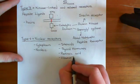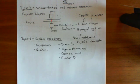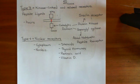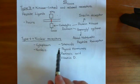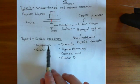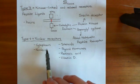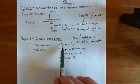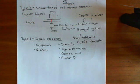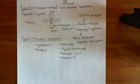That concludes our discussion of the four types of receptors. We have ligand-gated ion channels acting within milliseconds; G-protein-coupled receptors acting within seconds; kinase-linked and related receptors producing changes in gene expression over hours; and type 4 nuclear receptors, which are in the cytoplasm or nucleus — not in the plasma membrane — so their ligand, such as steroids, must be hydrophobic enough to diffuse across the plasma membrane to reach them.